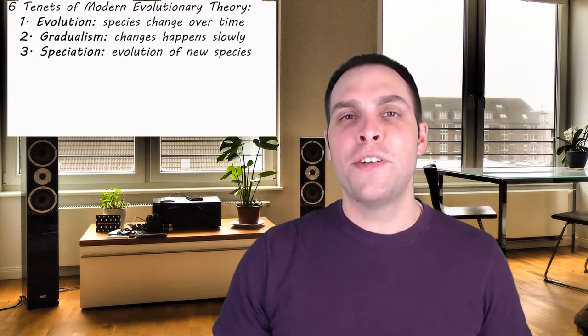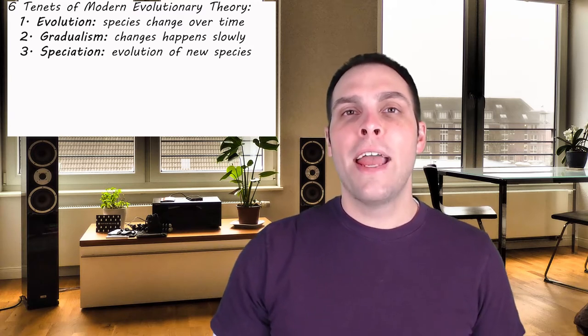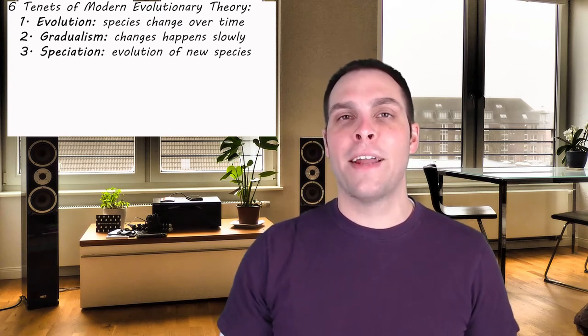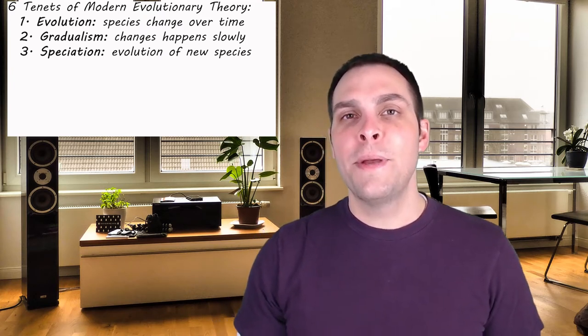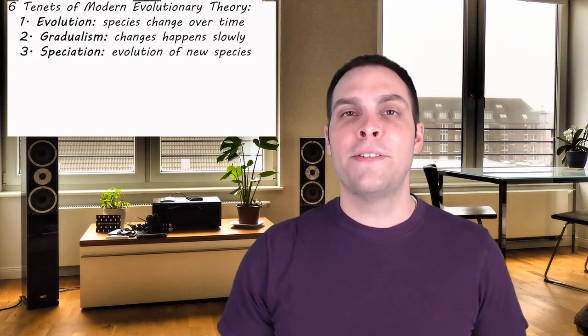The third key tenet of modern evolutionary theory is speciation. If enough change occurs within a subpopulation of a species over time it will become so different from the other members of its species that it can be classified as a new species. Speciation is a fact and we know this is true for one very obvious reason. There are millions of species living on the planet today. These species didn't appear out of nothing.